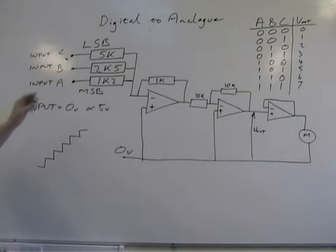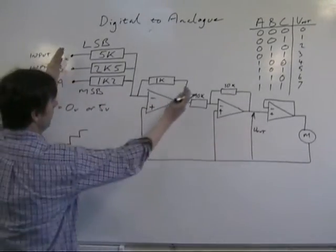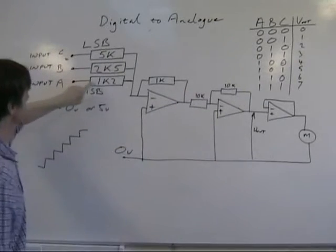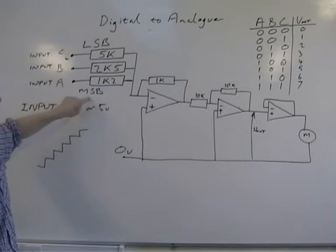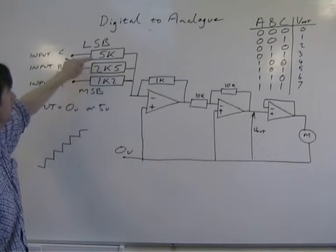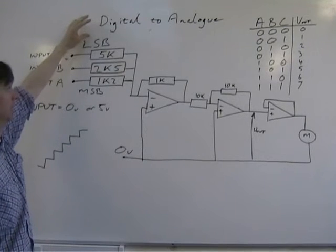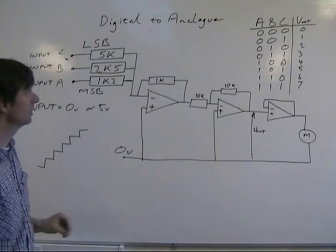Once again, digital to analogue to control the speed of the motor. Summing amplifier, that's the most significant bit. As you step up, the resistance doubles. If there's four bits, the next one would be 10k in this power.